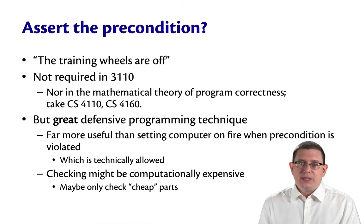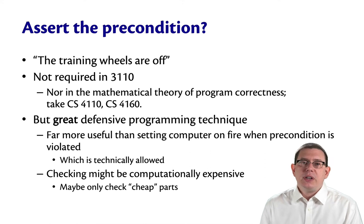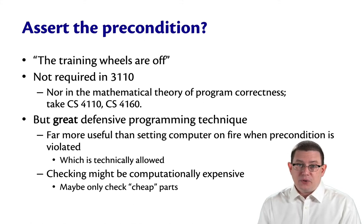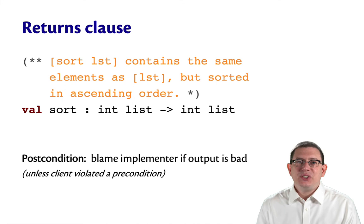For that reason, we often omit checking all the pieces of a precondition. Maybe you only check some computationally cheap pieces of it. Maybe you only check what it takes constant time to check and don't check the rest. Or maybe you say it's on the client if they violate the precondition. Next, let's look at the returns clause. In our OCaml code, we typically leave off the returns colon and just write the returns clause as the first sentence of the specification.